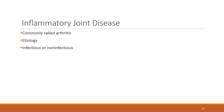Inflammatory joint disease — commonly called arthritis — is somewhat different from osteoarthritis. It involves inflammatory damage and destruction of the synovial membrane and articular cartilage, with systemic signs of inflammation such as fever, elevated white blood cell count, malaise, and loss of appetite. This can be infectious or non-infectious in origin.